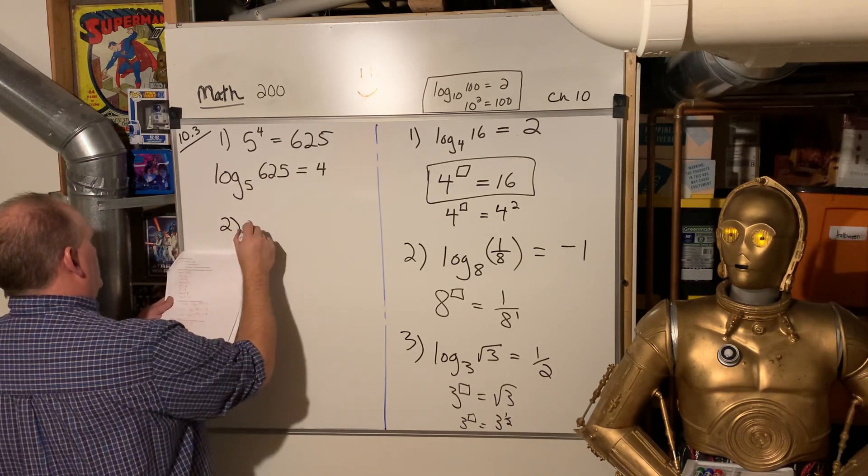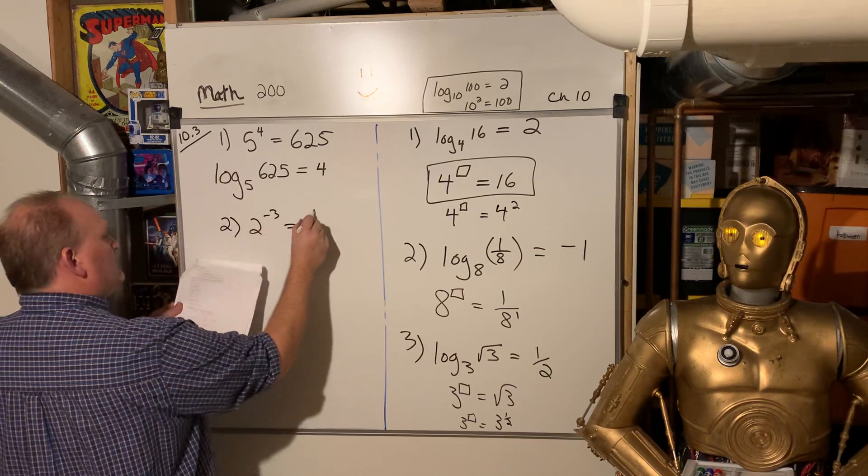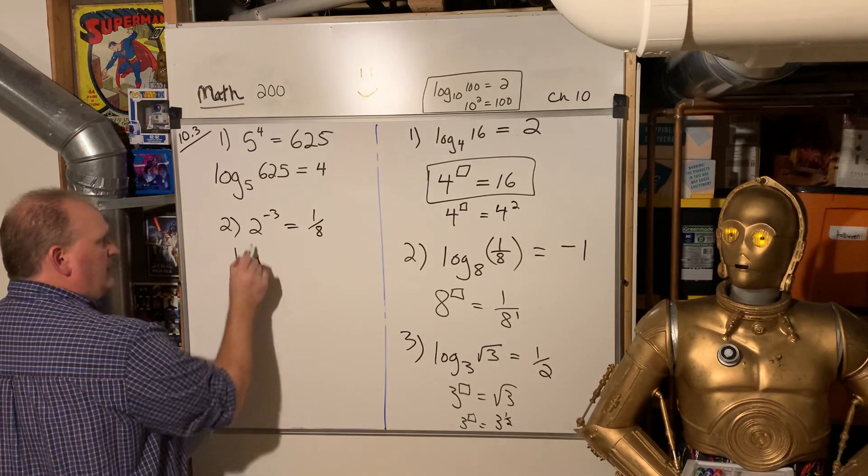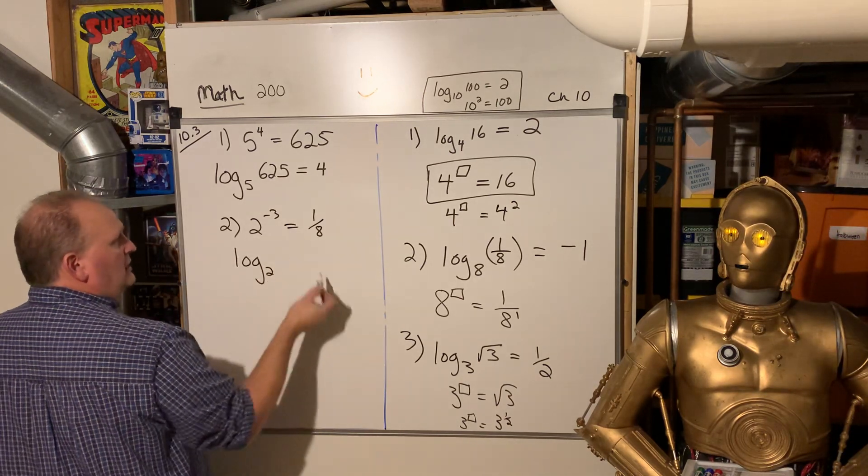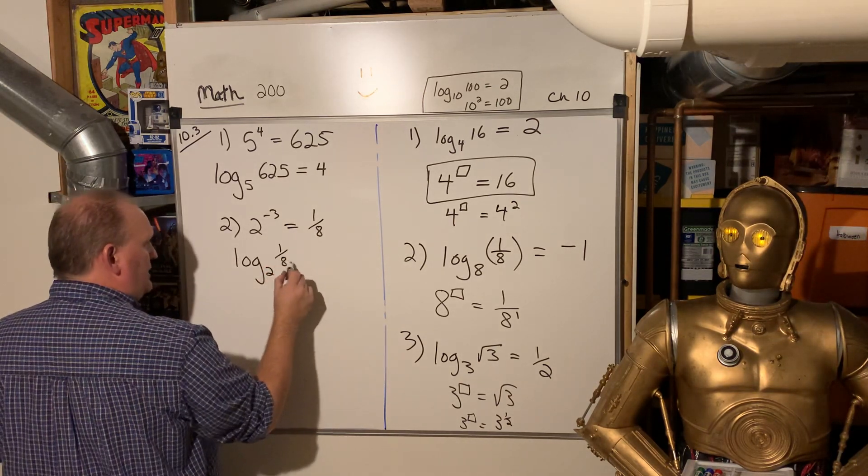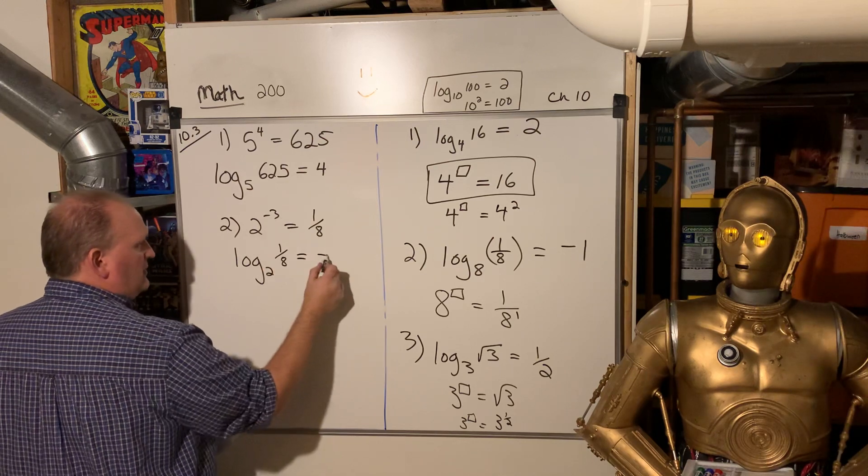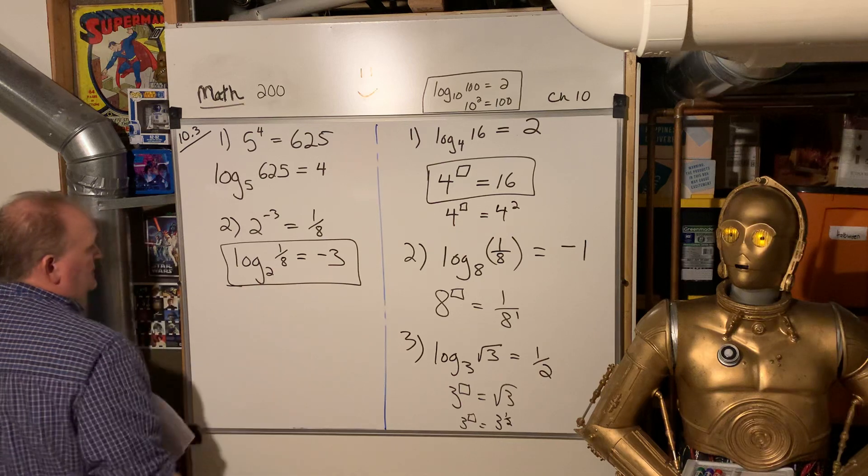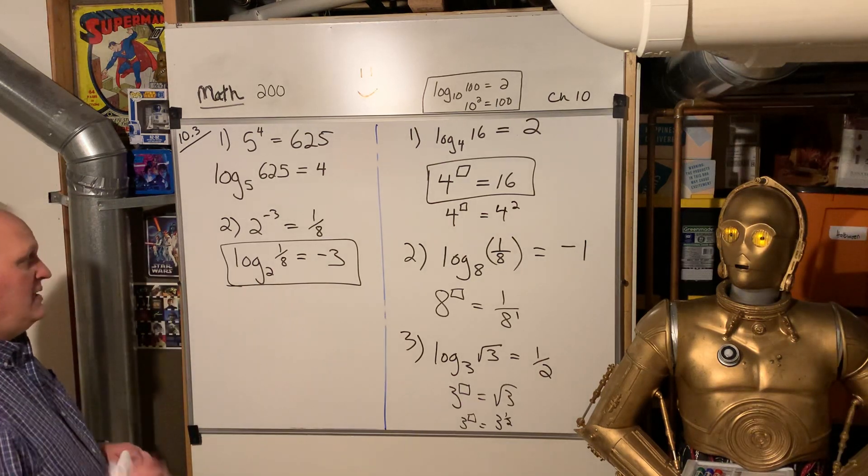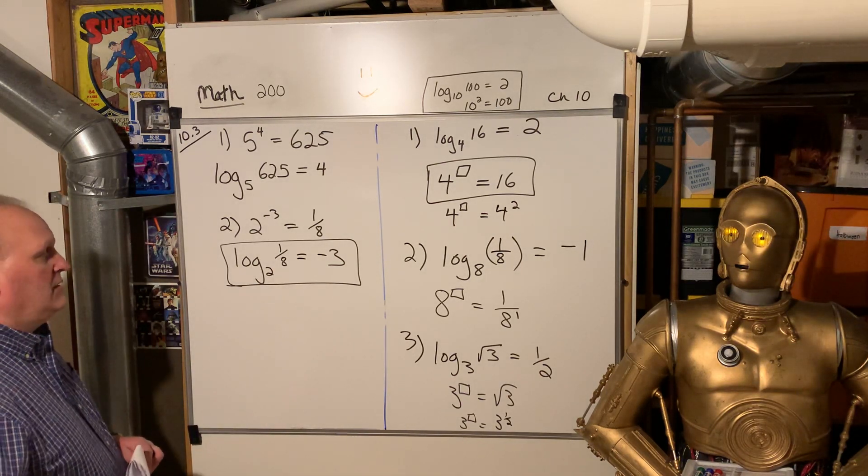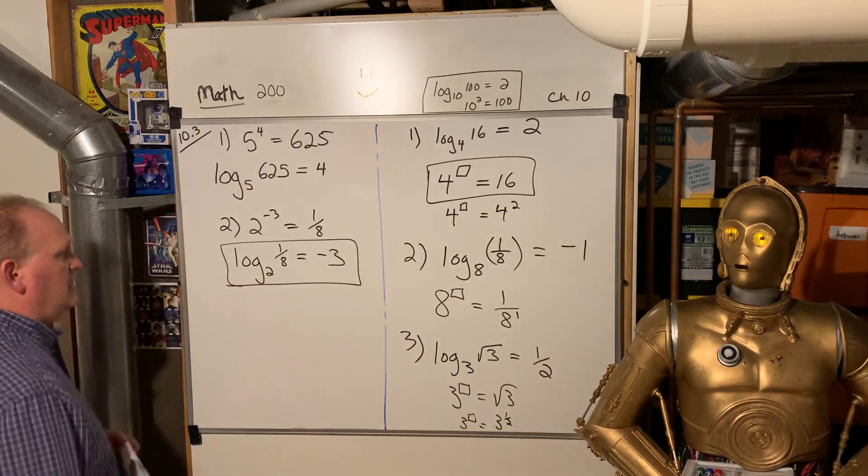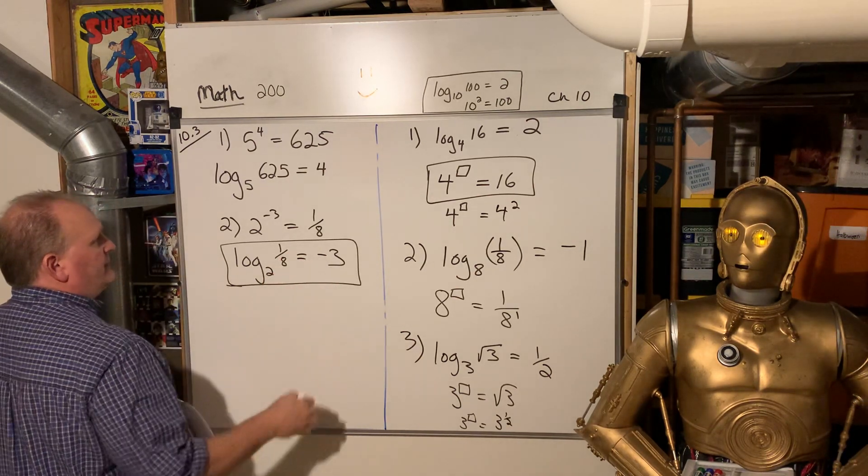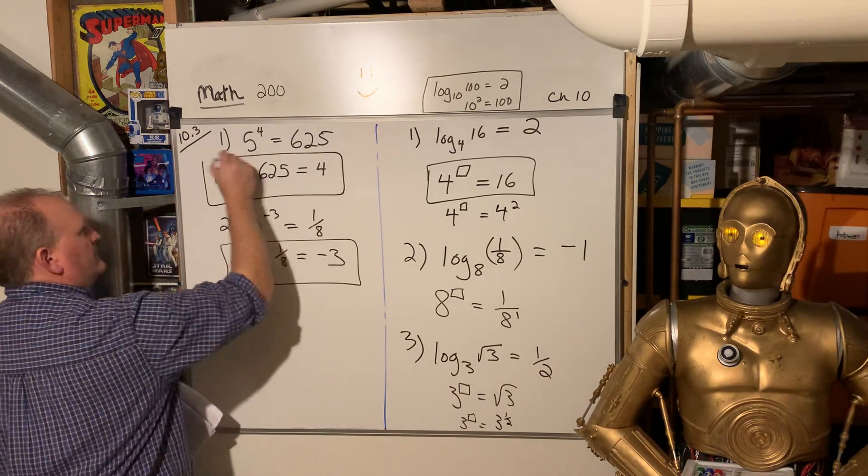Two, two to the negative three equals one eighth. So what does that mean? Well, that means log base two of one eighth is equal to the power. It's lonely, powerful people are lonely all by itself. Negative three, which does make total sense. Two to the negative three power is one over two to the third. Two to the third is eight. That's one eighth. So if I take two to the negative three, I get one eighth. All right.